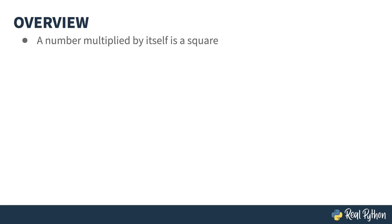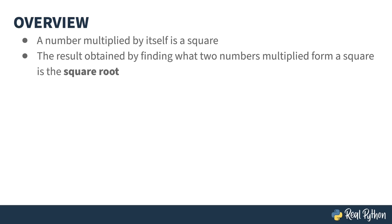A square is any number multiplied by itself. A square root is a number that, when multiplied by itself, gives the square. 5 squared is 25, so the square root of 25 is 5. The knowledge of square roots has been around for thousands of years — there are Babylonian clay tablets dating from 1800 BCE that reference this concept.